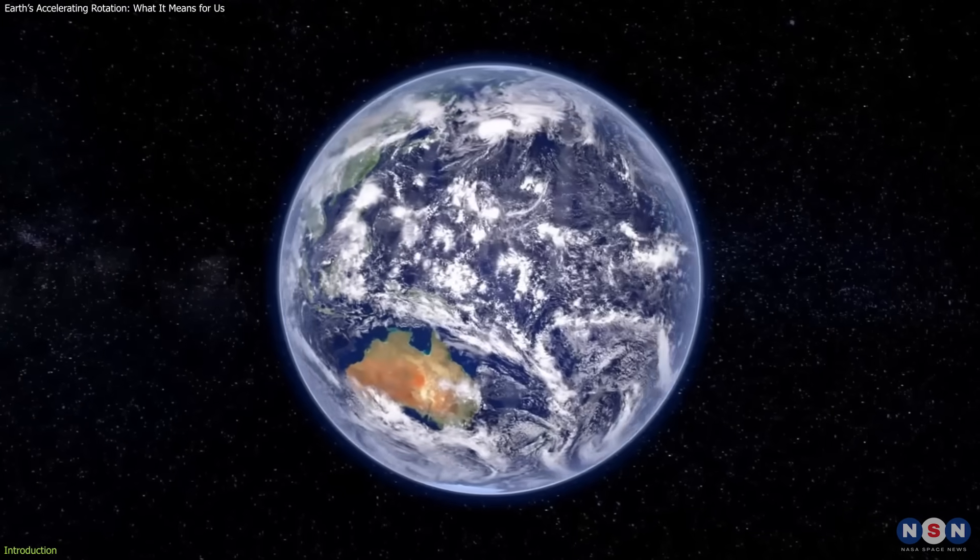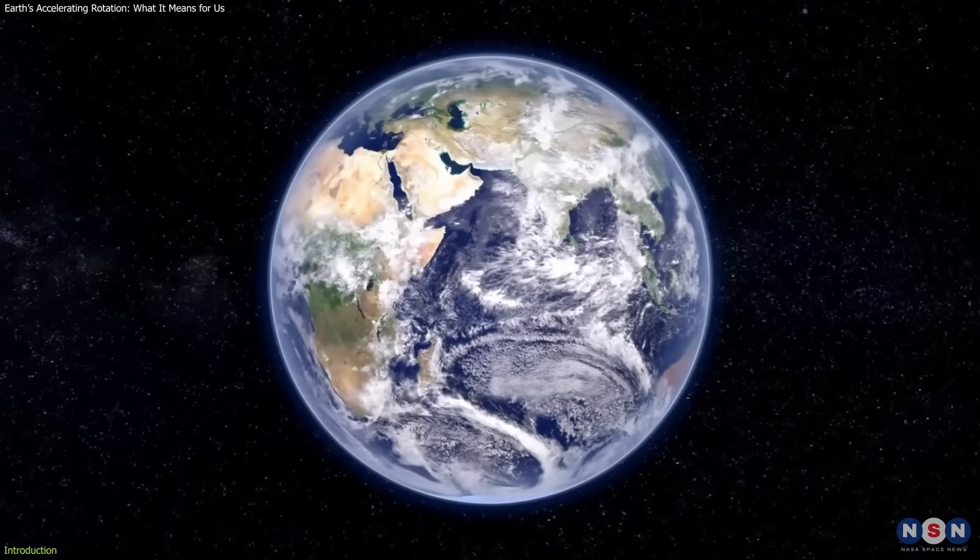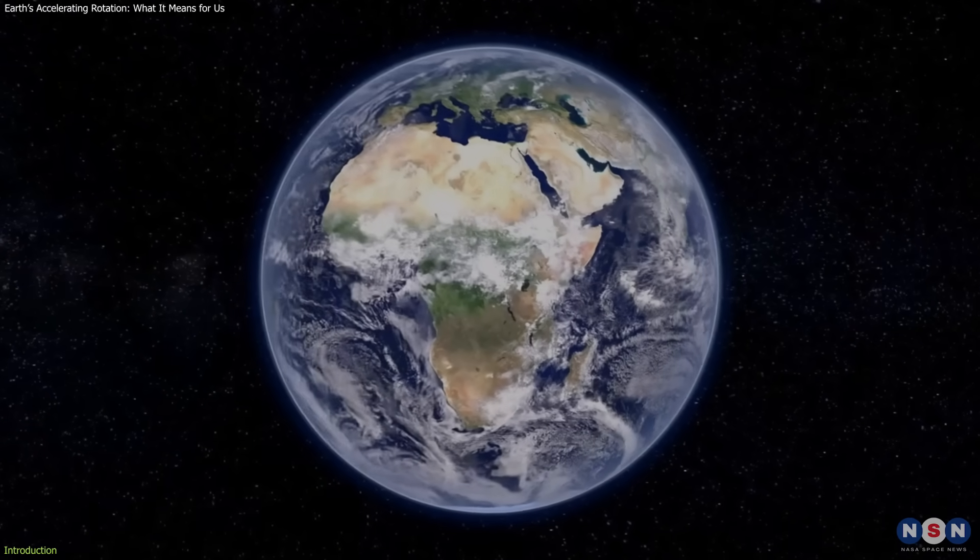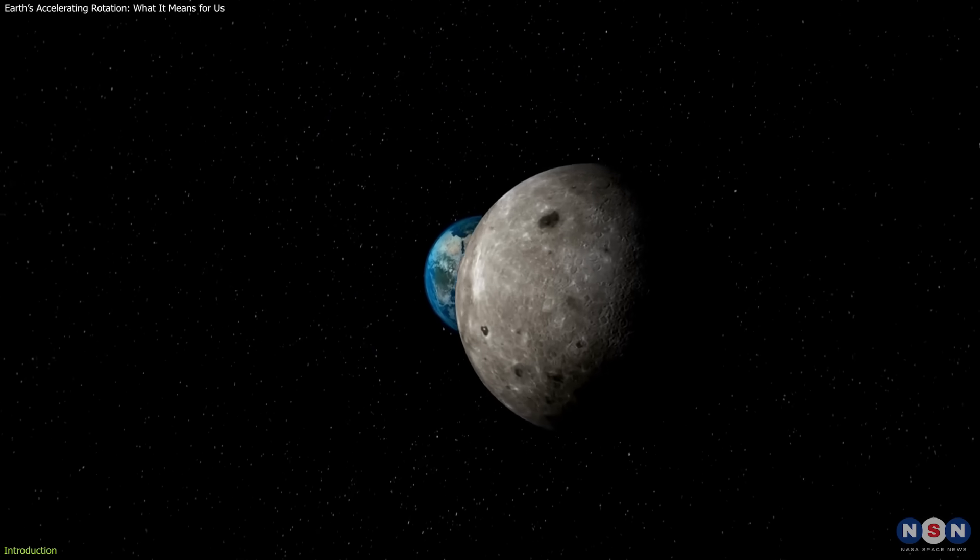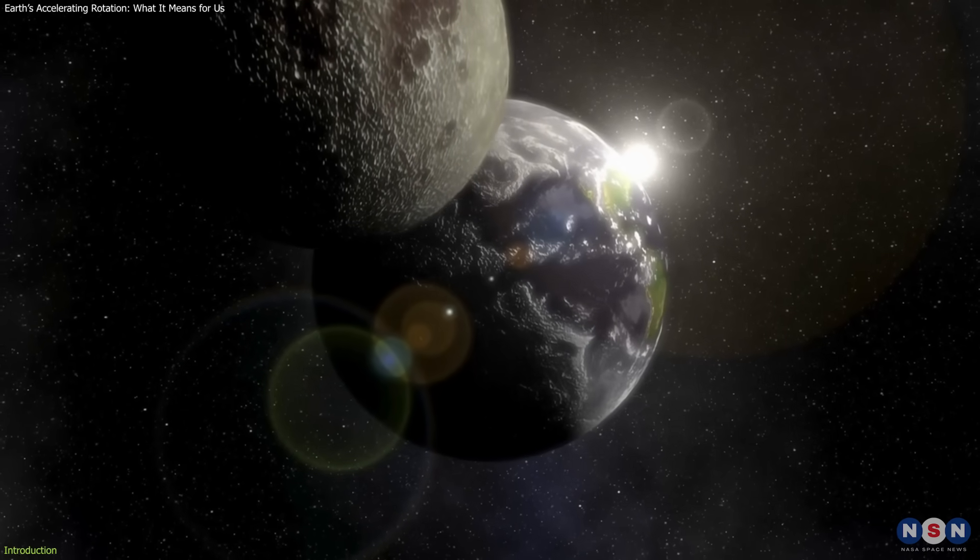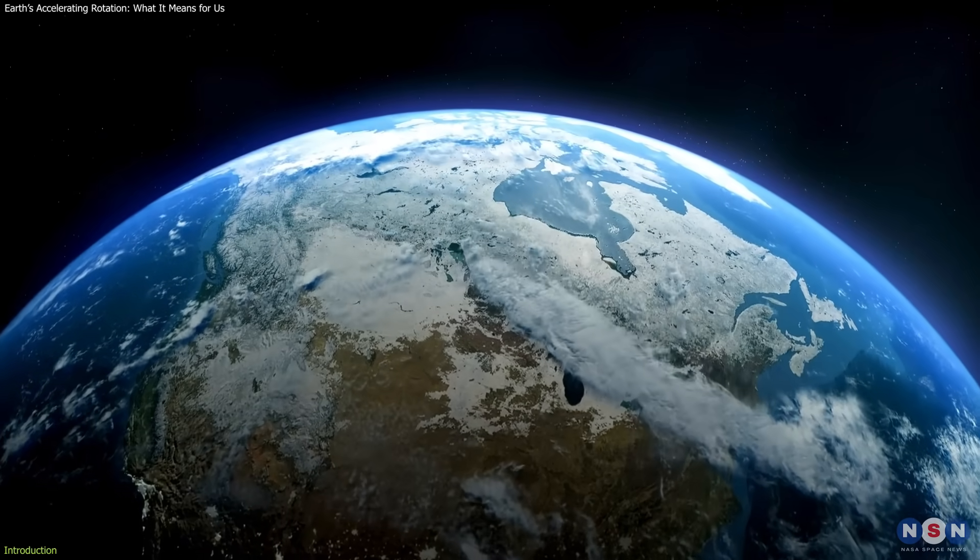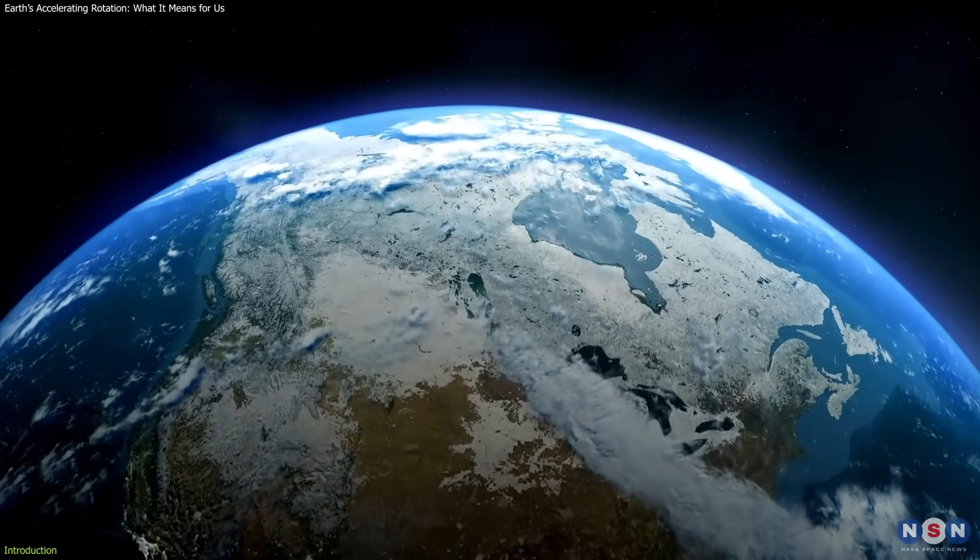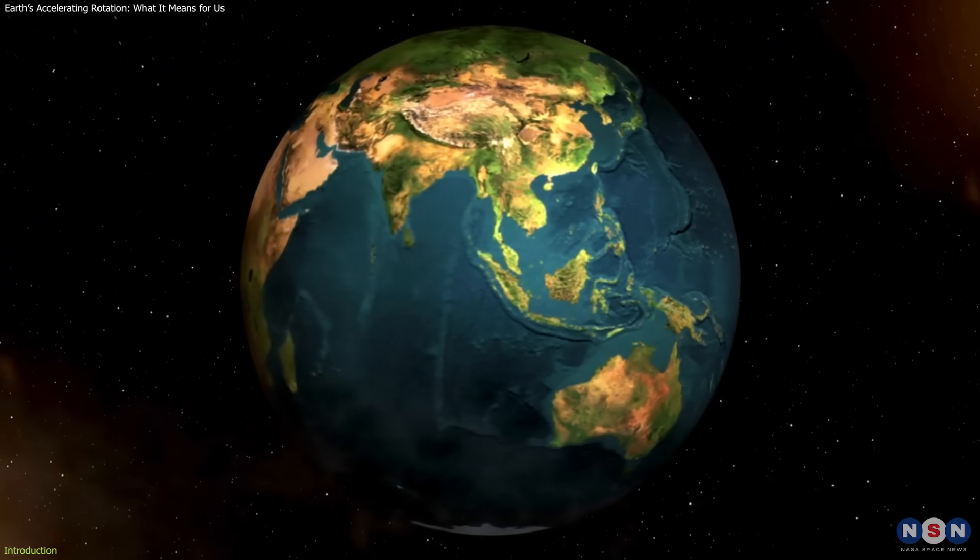This shift is unusual, as Earth's rotation has been slowing down over millions of years. The primary cause is the moon's gravity, which speeds up Earth's spin when it's closer and slows it down when it's farther away. Seasonal changes, atmospheric dynamics, and climate change also play a role.